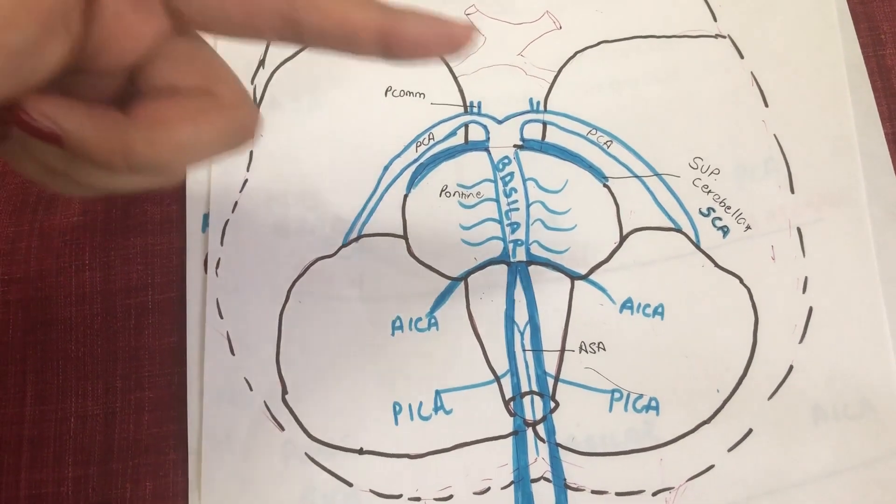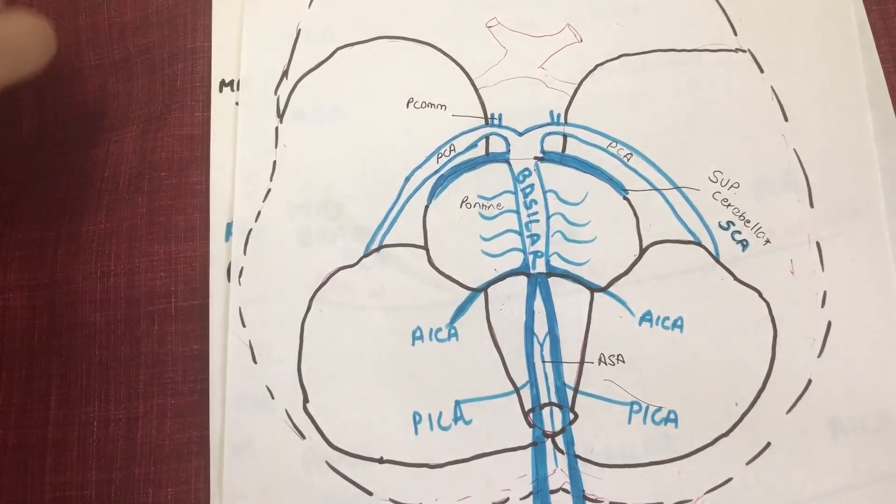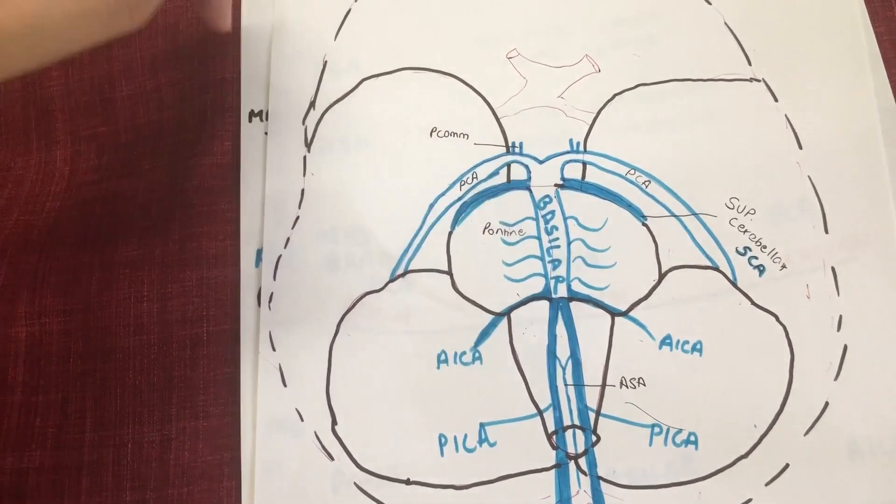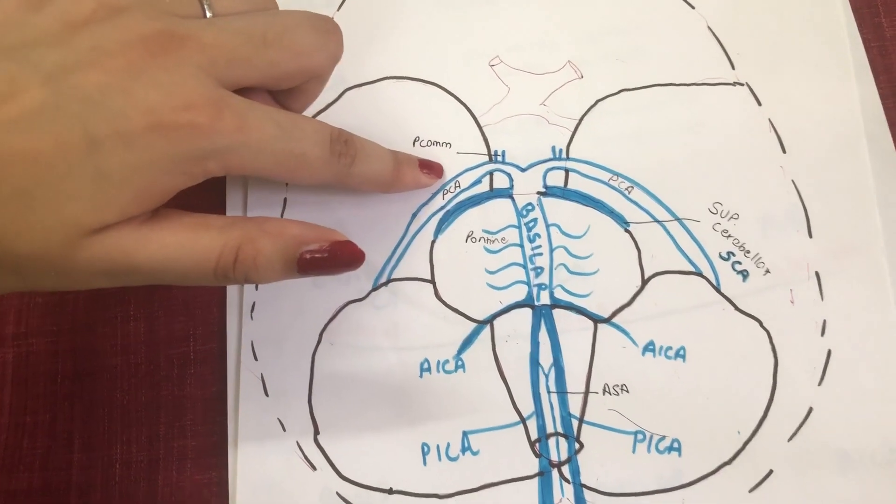This artery is known as the superior cerebellar artery. So you've had the PICA, the AICA, and the SCA, and these three collectively supply the cerebellum. But there's one more artery that the basilar artery ends up providing.